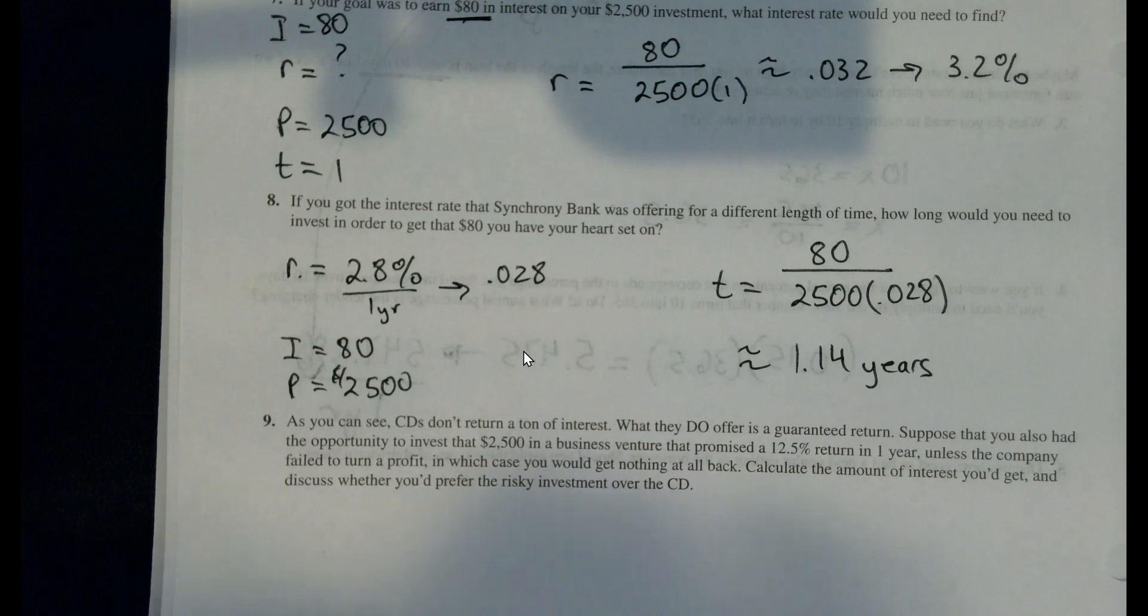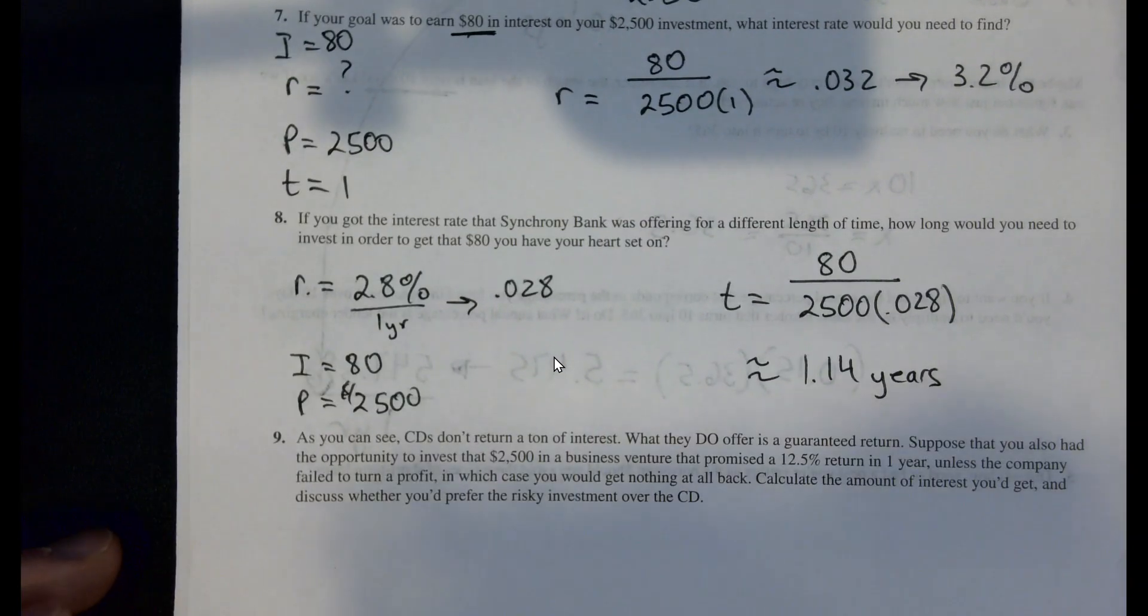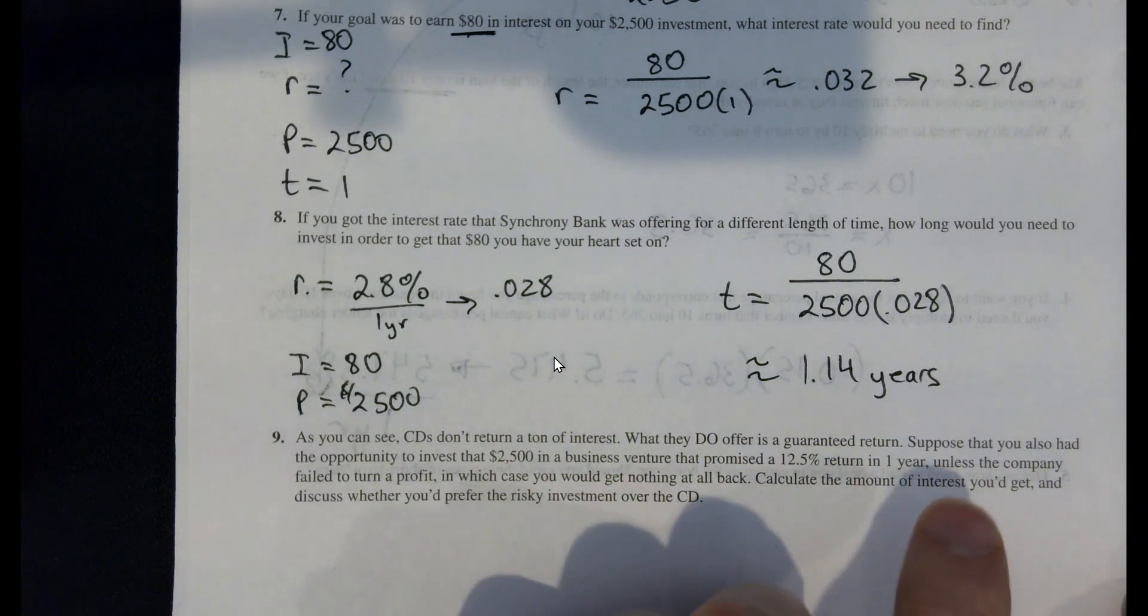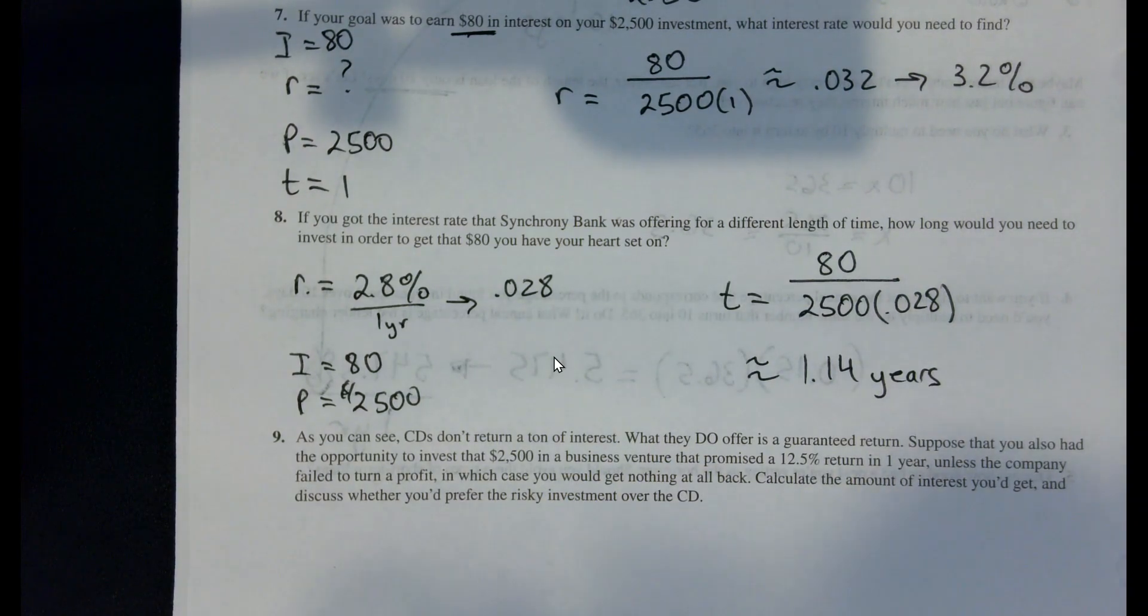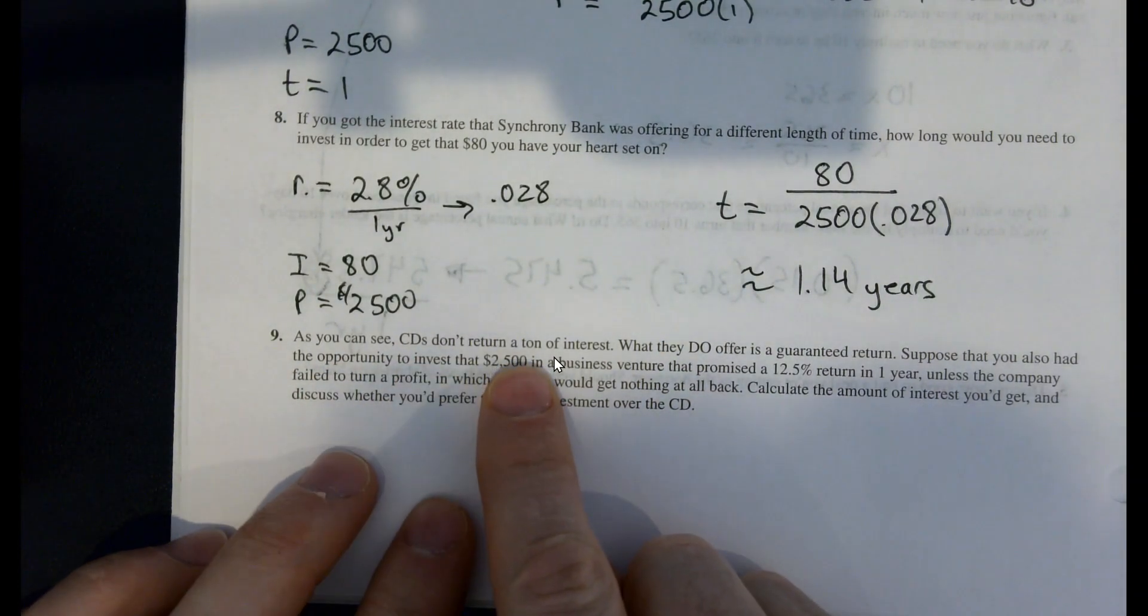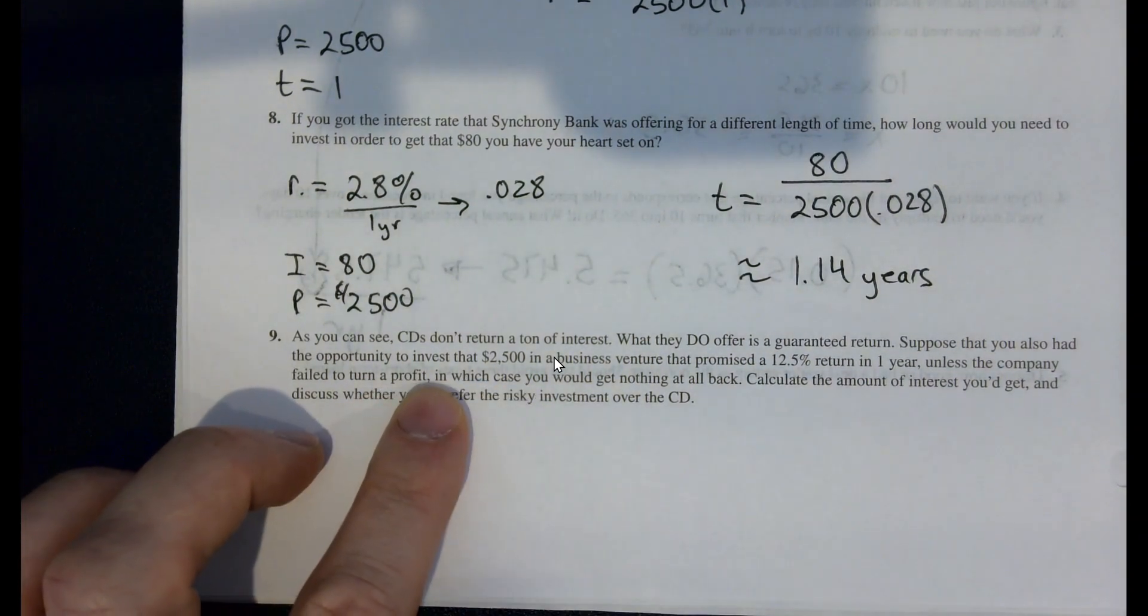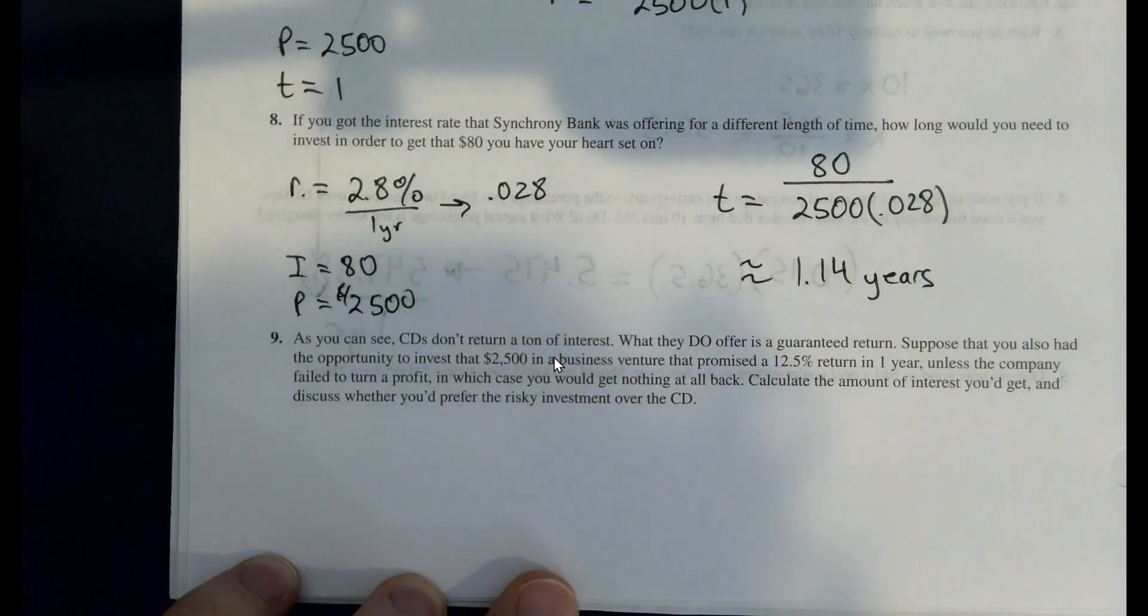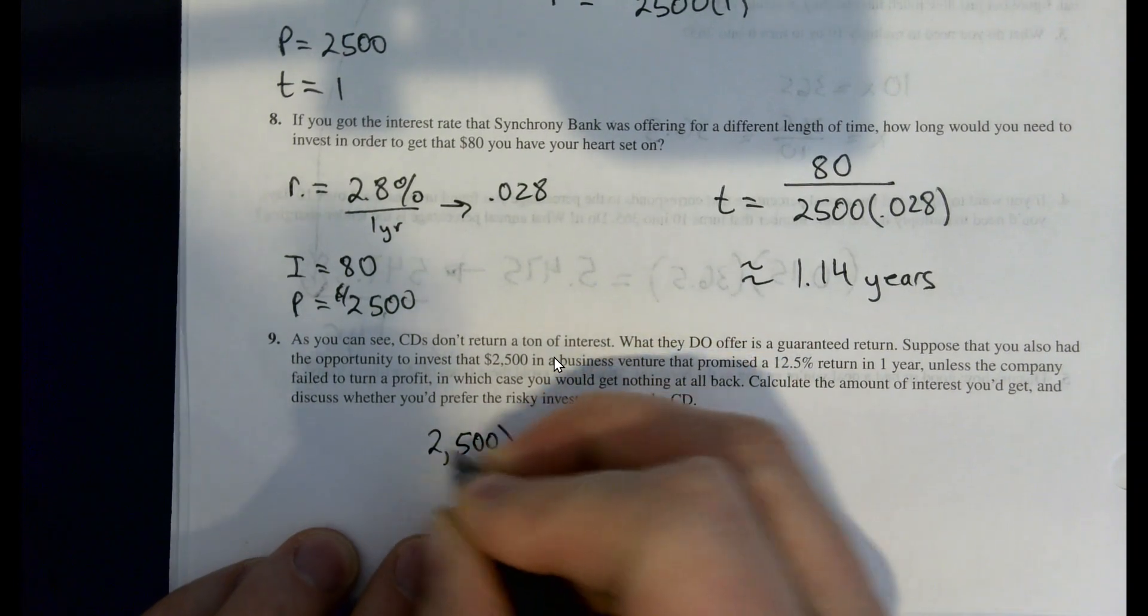And we'd have to determine is that really practically possible? Like, if these are a fixed length of time CDs and you can only cash them in after one year, then we might not be able to do that if you're not able to cash them in a month after a month's time. The author's like, look, CDs don't return a ton on interest, but they do offer a guaranteed return. So let's suppose you also do a business venture where you get a 12.5% return in one year unless the company failed to return a profit. And then you get nothing back.